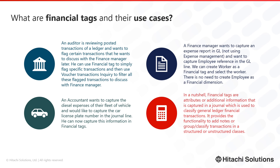A finance manager who wants to capture an expense report in general ledger — not specifically using expense management — and wants to capture an employee reference in a general ledger line, can handle this by creating worker as a financial tag and selecting that worker as a tag value in the journal line. There is no need to create employee as a financial dimension. In a nutshell, financial tags are attributes or additional information captured in a journal line, used to classify ledger financial transactions. They provide functionality to add notes or group transactions in a structured or unstructured manner, and you can filter or report on financial tags in the voucher transaction query form.